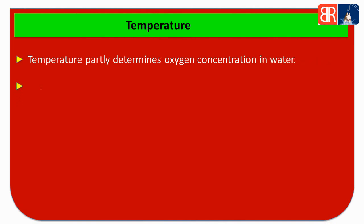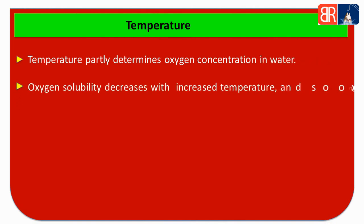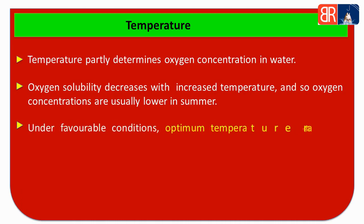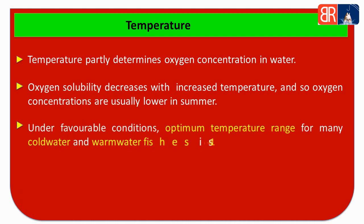Temperature partly determines oxygen concentration because the solubility of oxygen decreases with an increase in temperature. That is why oxygen concentration remains low during summer season. For cold water fishes, the optimum temperature is 14 to 18 degree Celsius, and for warm water fishes, the optimum temperature is 24 to 30 degree Celsius.